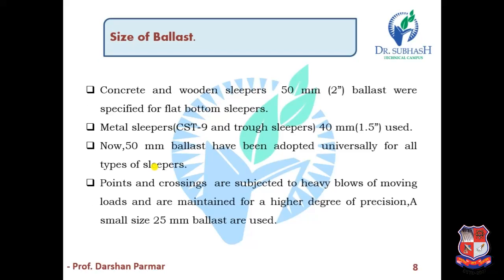Now, the size of ballast. For concrete and wooden sleepers, 50 mm (2 inch) ballast is specified for flat-bottom sleepers. For metal sleepers such as CST-9 and trough sleepers, approximately 40 mm (1.5 inch) is used. Nowadays, 50 mm ballast has been adopted universally for all types of sleepers around the world. For points and crossings, which are subjected to heavy blows of moving loads and require a higher degree of precision, a smaller size of 25 mm ballast is used.